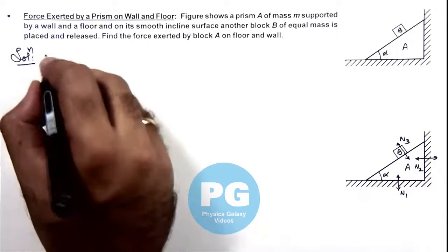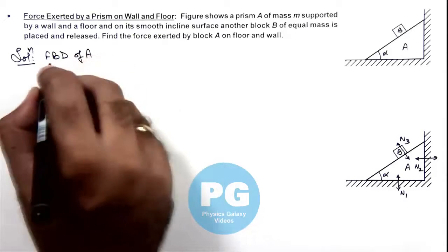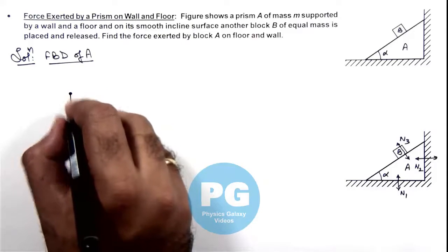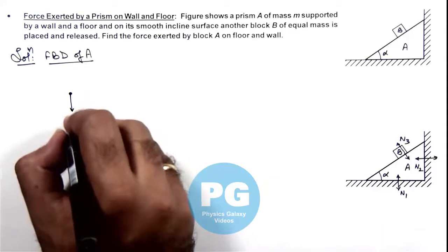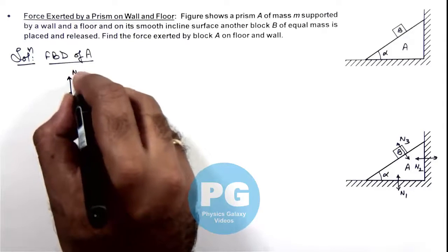Here we draw free body diagrams of these blocks to analyze the situation. And for block A we can write it is experiencing its weight mg in downward direction, a normal reaction N1 in upward direction.